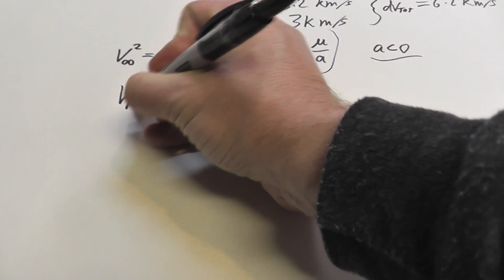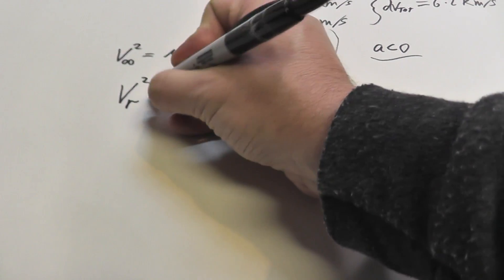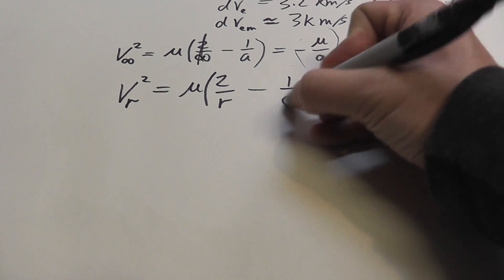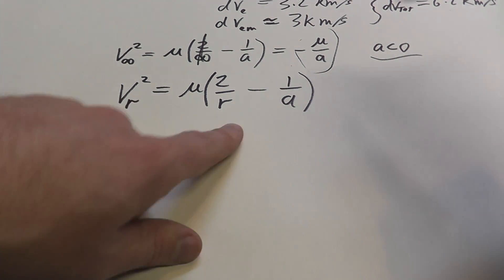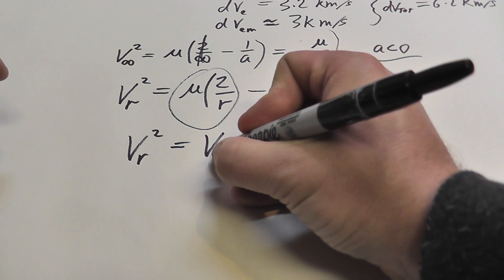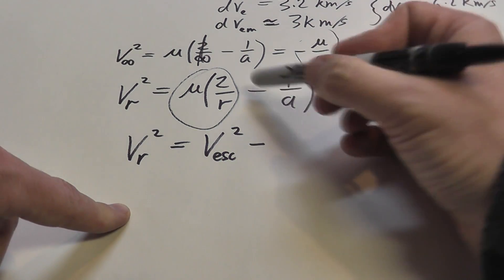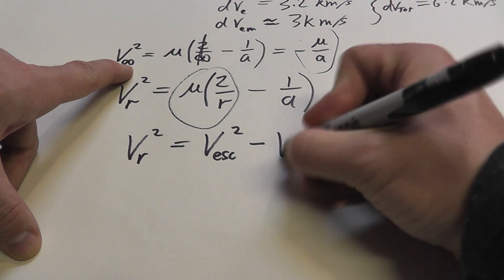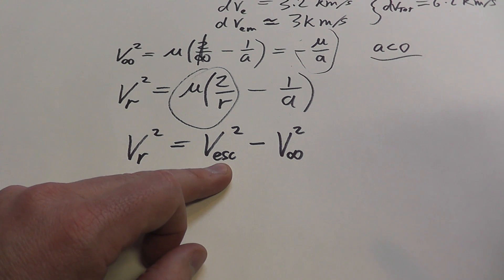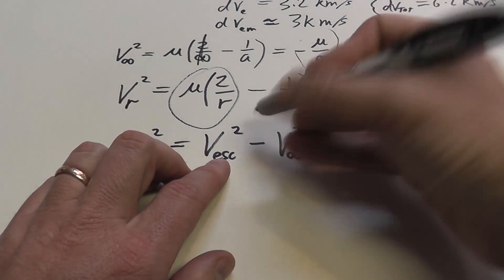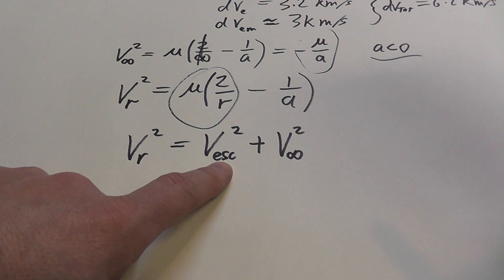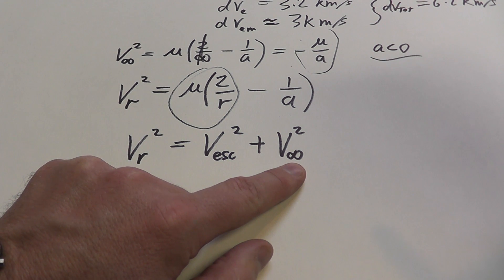Okay, so, observing that v infinity is equal to minus mu over a, let's find out how fast you have to be going at velocity r. v r is, again, is equal to mu times 2 over r, well, let's just do that, times 1 over a. Let's come back to this equation. How fast do you have to be going to be going at v infinity? Well, guess what? This term is an escape velocity. So, v r squared is equal to v escape squared minus, oh, look, mu over a is equal to v infinity. We're getting confused here a second. The velocity you need at radius r is equal to the escape velocity squared plus the velocity you need at infinity squared.